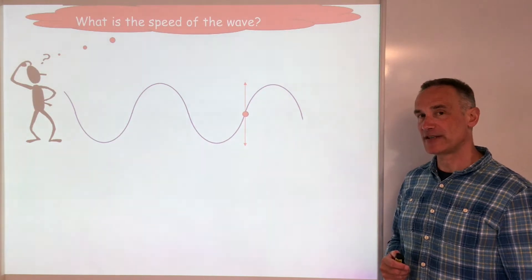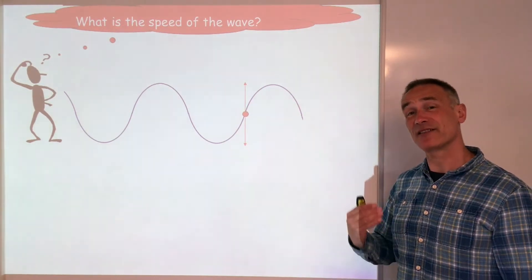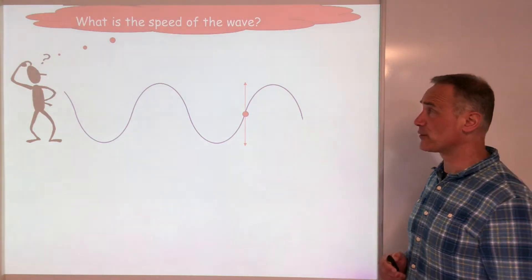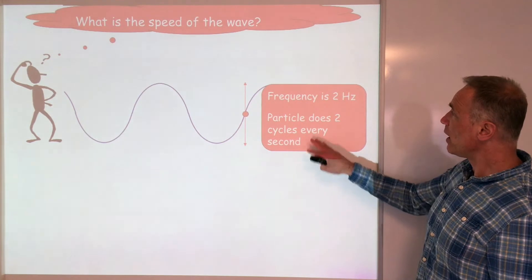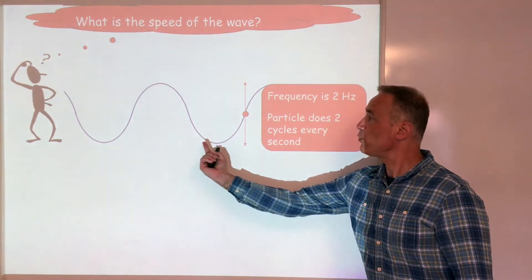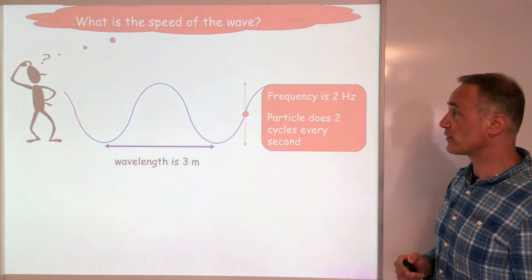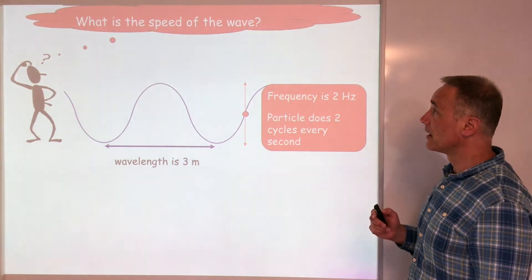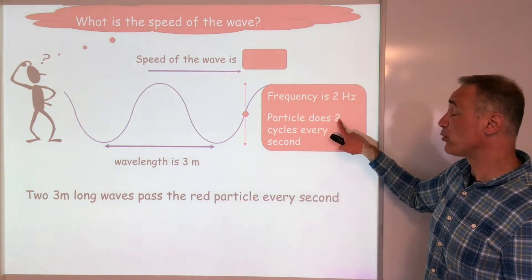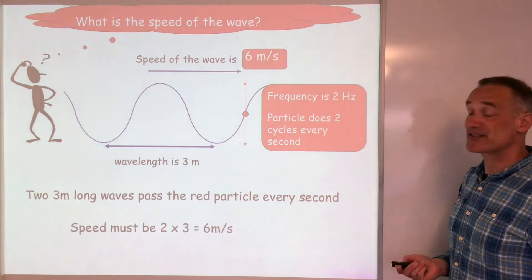So we've looked at two of our three equations. The third one is wave speed equals frequency times wavelength, and I want you to help me derive it, because learning equations without understanding where they come from makes them harder to use and remember. If I've got a frequency of 2 hertz, that means 2 wavelengths are passing a point every second. If I make the wavelength 3 metres, then 2 wavelengths × 3 metres gives 6 metres of wave passing the point in 1 second, so the wave is travelling at 6 metres per second.